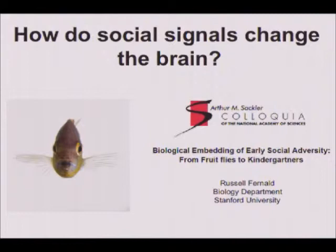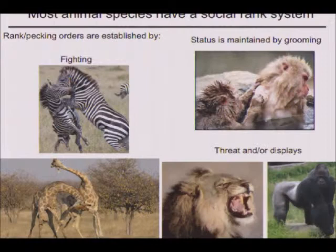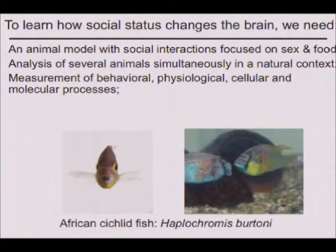Most animals, as you know, have a social ranking system. Usually that is solved by fighting and set up by fighting, and then maintained either by grooming or by some other mechanisms. I'm going to tell you about how we look at the consequences of social status on the brain. For that, you need an animal model whose life is focused entirely on sex and food — which also explains why working on this model leads a lot of undergraduates to work in my lab, because of course it's a model of their systems as well. You need to be able to look at many animals simultaneously in a natural situation, and measure at all the levels of analysis we're interested in. This African cichlid fish meets these criteria, and I'm going to tell you a little bit about their natural social life.